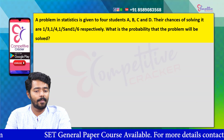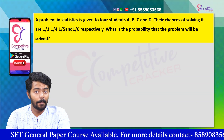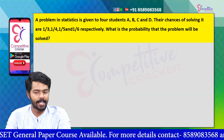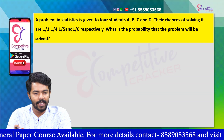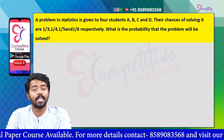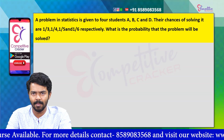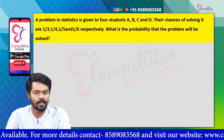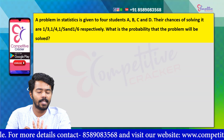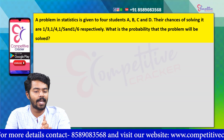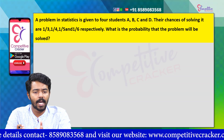A problem in statistics is given to four students A, B, C and D. Their chances of solving it are 1 by 3, 1 by 4, 1 by 5 and 1 by 6 respectively. A, B, C, D — the four students have a problem in statistics.